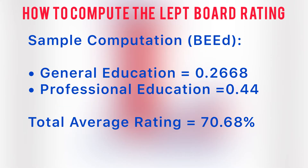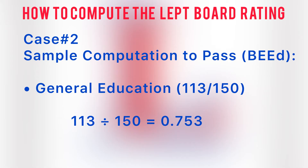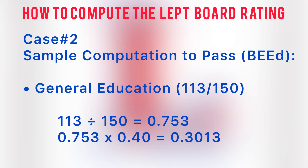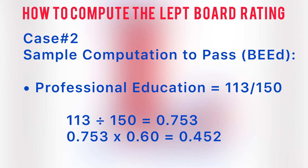To pass the board, the BE ed taker must have a score of at least: for general education, 113 divided by 150 equals 0.753, multiplied by 0.40 gives 0.3013. For professional education, 113 divided by 150 equals 0.753, multiplied by 0.60 gives 0.452.